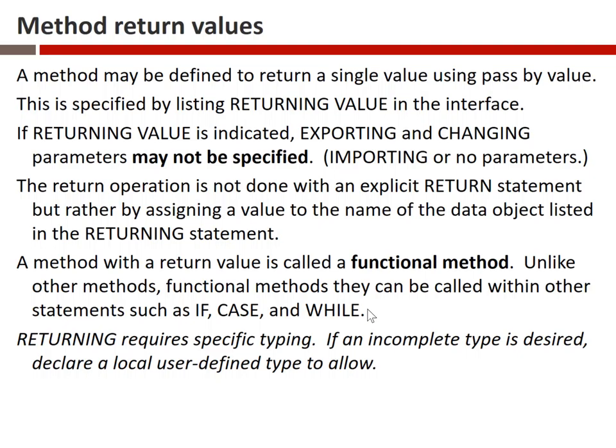One oddity associated with using returning is that we have particular restrictions on the kind of typing we can employ. We cannot use an incomplete data type. For example, we could not use type C without a specified length, because that's an incomplete data type. We could use string, type I, type D, or a user-defined data type. We cannot use incomplete data types for a returning parameter — and while the exact reason for this restriction isn't entirely clear, it can be resolved by doing your own type definition.